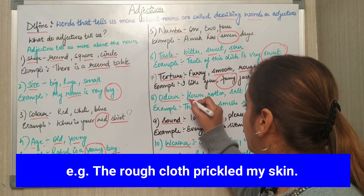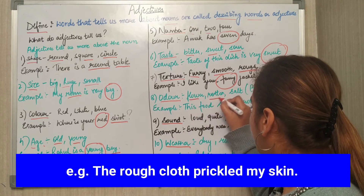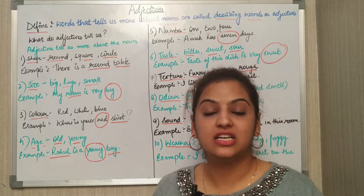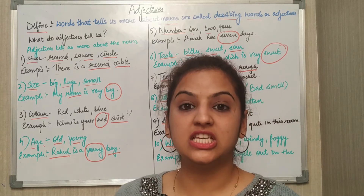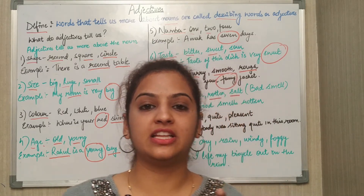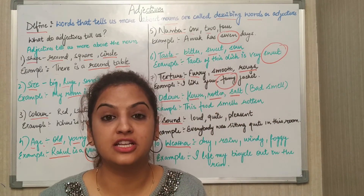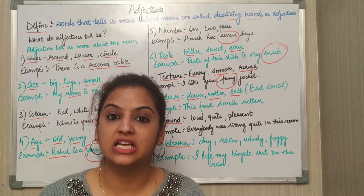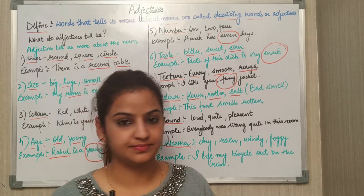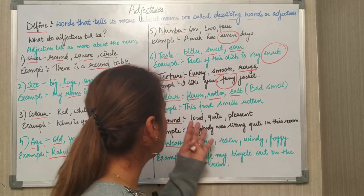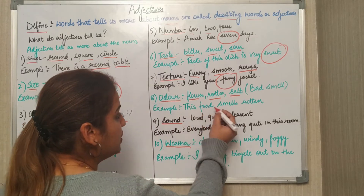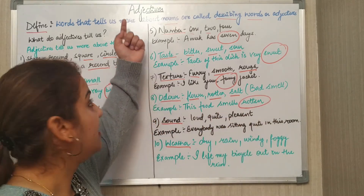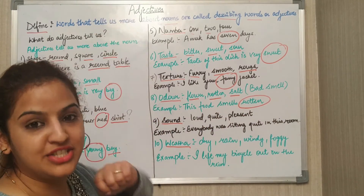Next is odor. Odor words include floury, rotten, stale. Odor basically means bad smell — a foul smell. Example: This food smells rotten. Now 'rotten' here is an adjective.